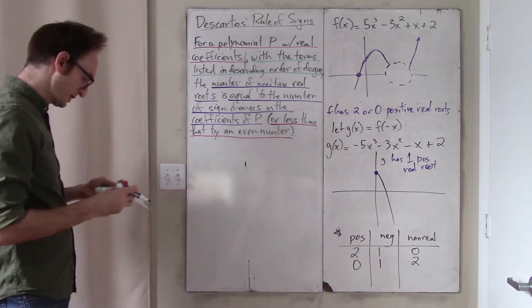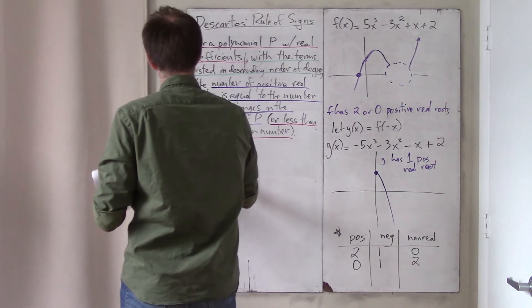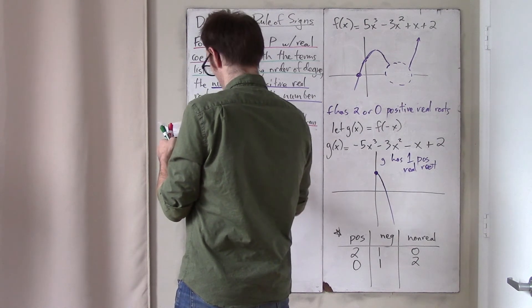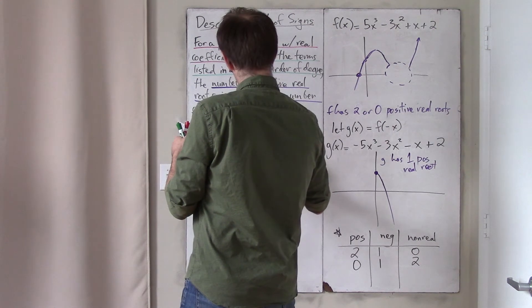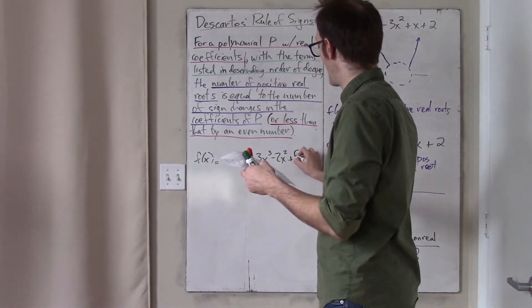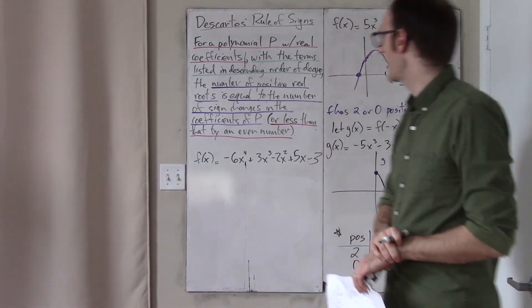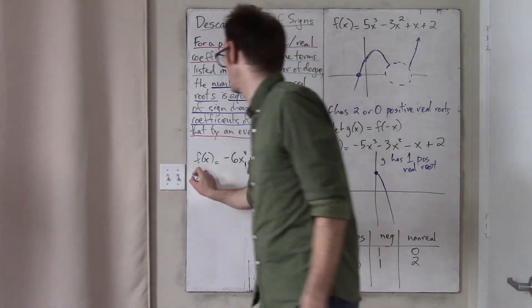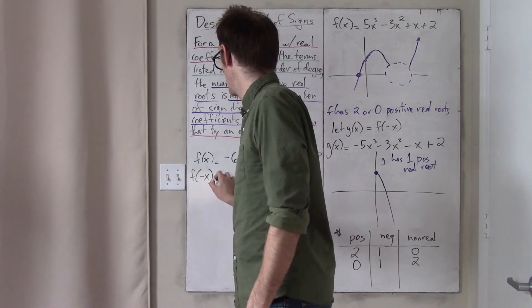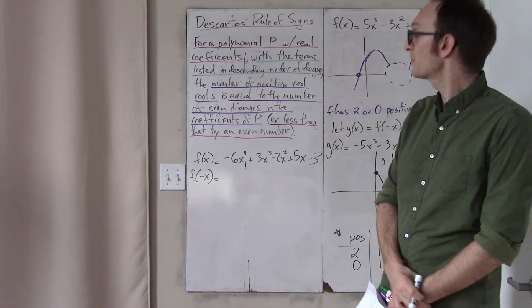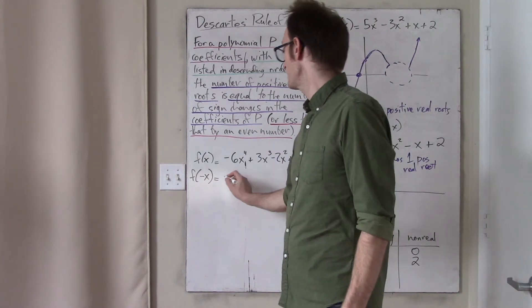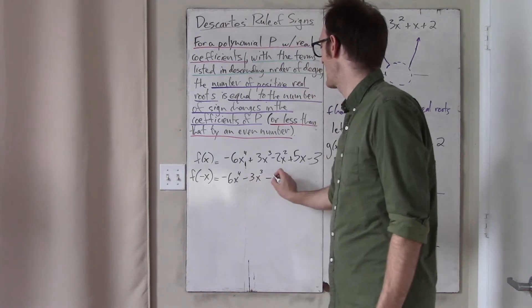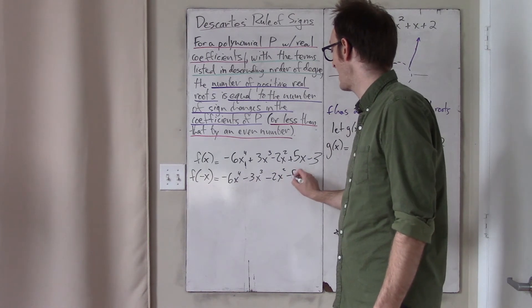Let's do one more problem with less talking. Here's the function: negative 6x to the fourth plus 3x cubed minus 2x squared plus 5x minus 3. Because we end up needing the same information every single time, what people often do is immediately compute f of negative x — flip this function across the y-axis. If you do that, you get negative 6x to the fourth minus 3x cubed minus 2x squared minus 5x minus 3.